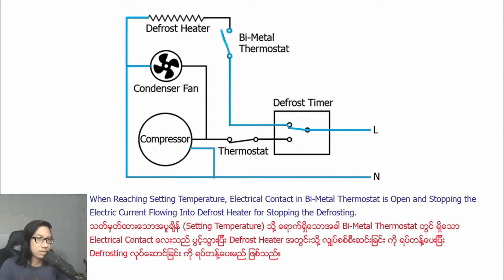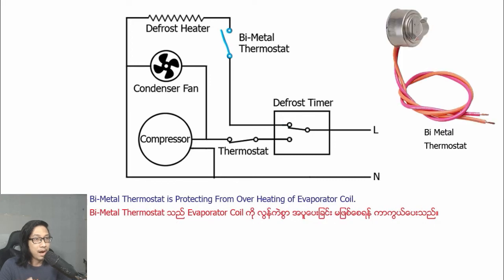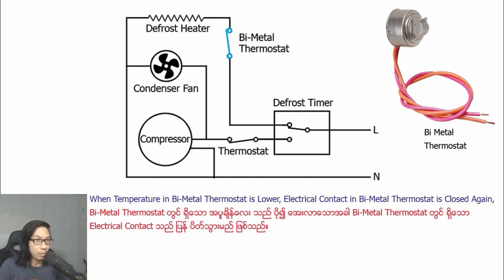When the set temperature is reached, the electrical contact in the bimetal thermostat opens, stopping the electric current flowing into the defrost heater and stopping the defrosting. The electrical contact for defrosting remains closed until the set time interval for defrosting is finished. When the temperature in the bimetal thermostat drops lower, the electrical contact in the bimetal thermostat closes again.